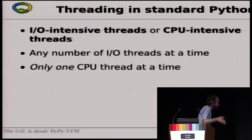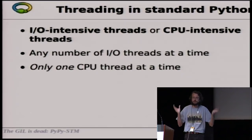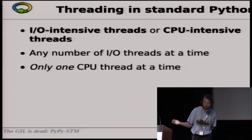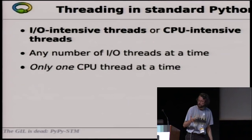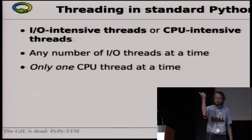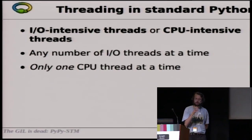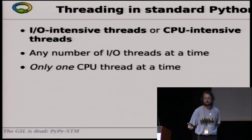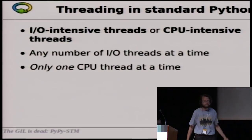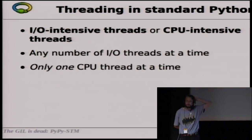What does it mean to have a multi-threaded program in Python? In normal Python — CPython or PyPy without STM — you need to divide your threads in two categories: threads doing input-output, which are typically blocked in some operating system call like file.read or receiving from a socket, and threads that are CPU-intensive. In standard Python with the GIL, you can have any number of threads doing I/O, but only one thread doing CPU-intensive computations at a time.